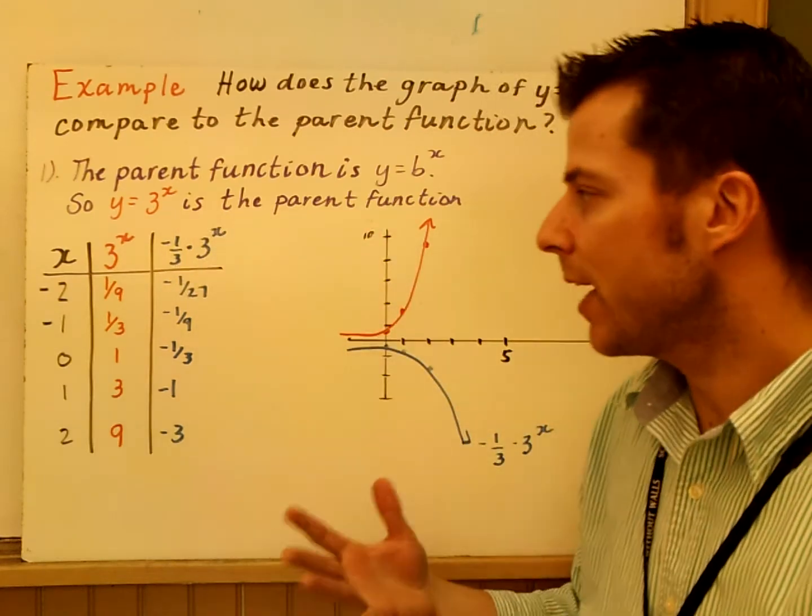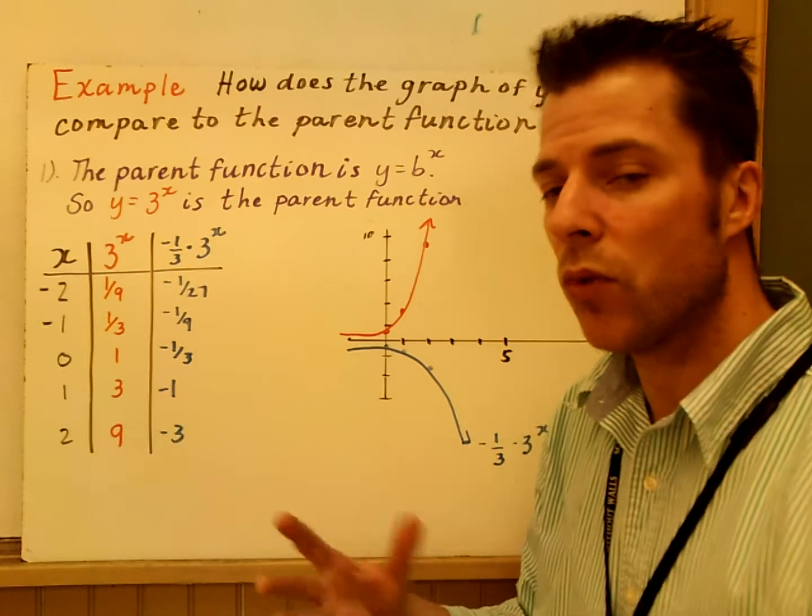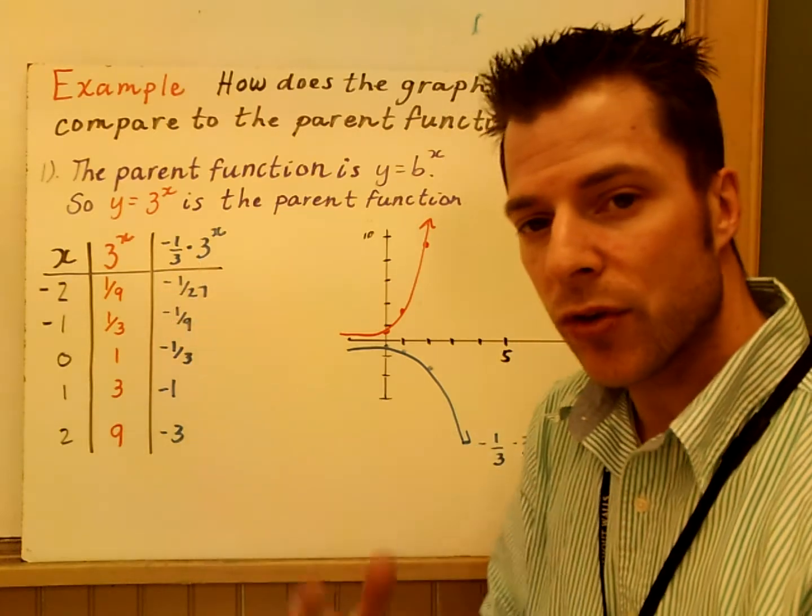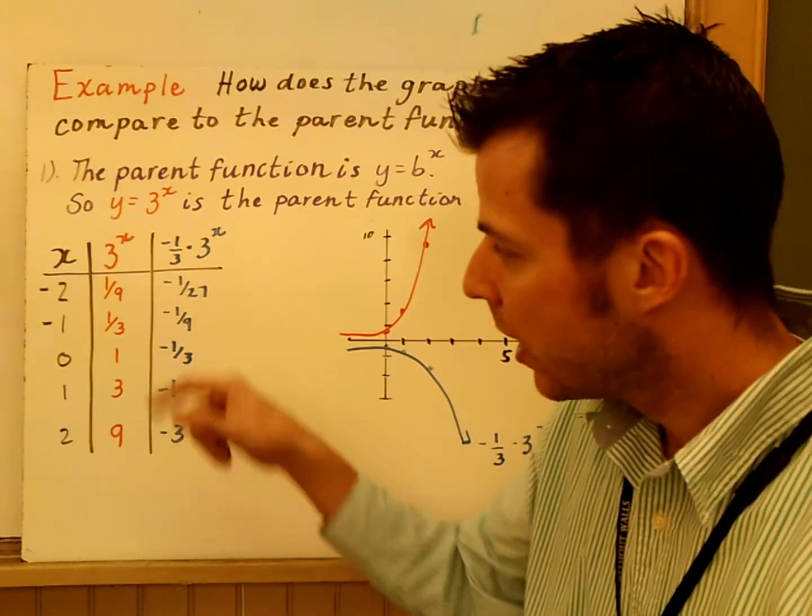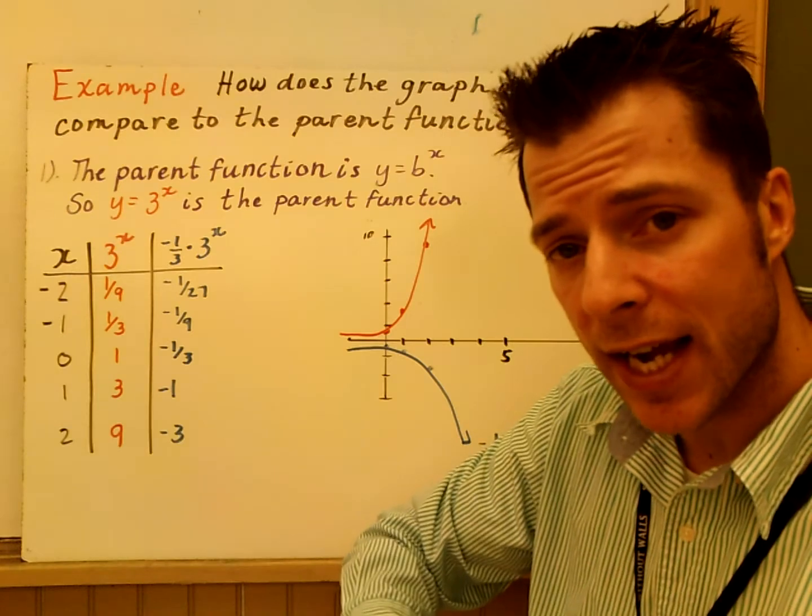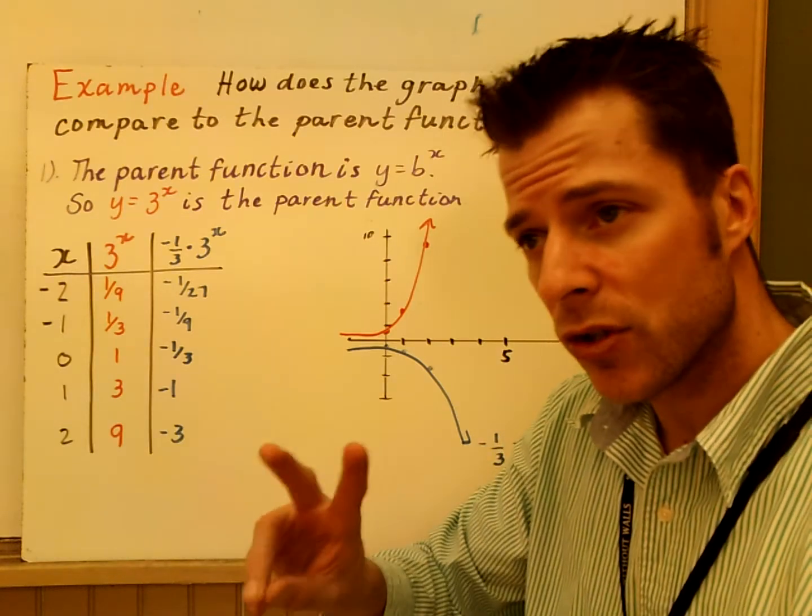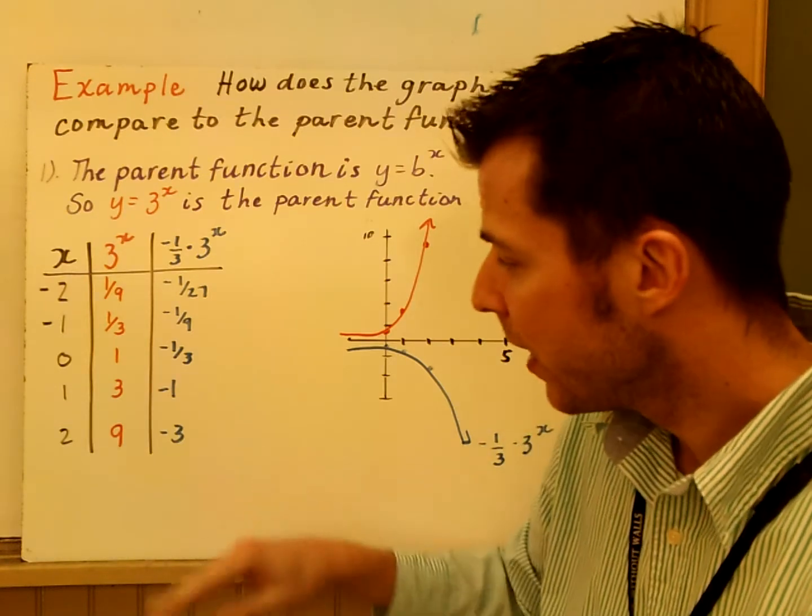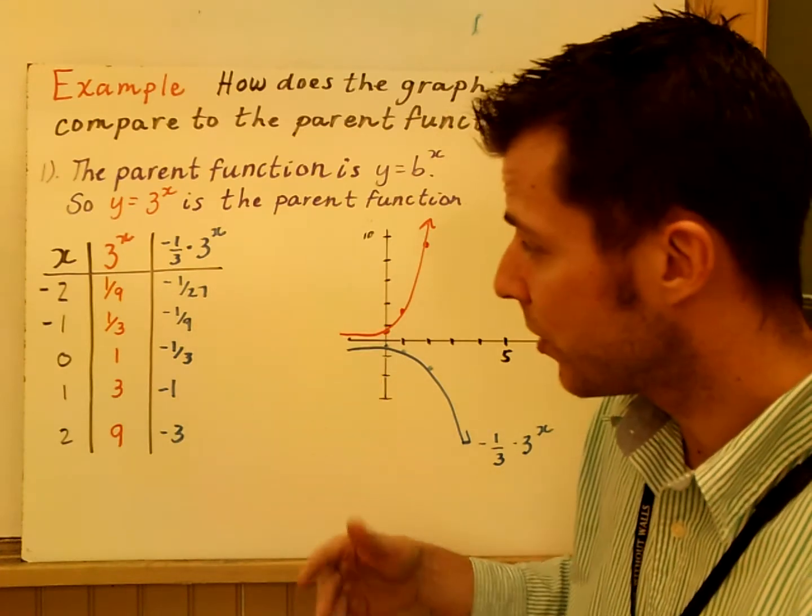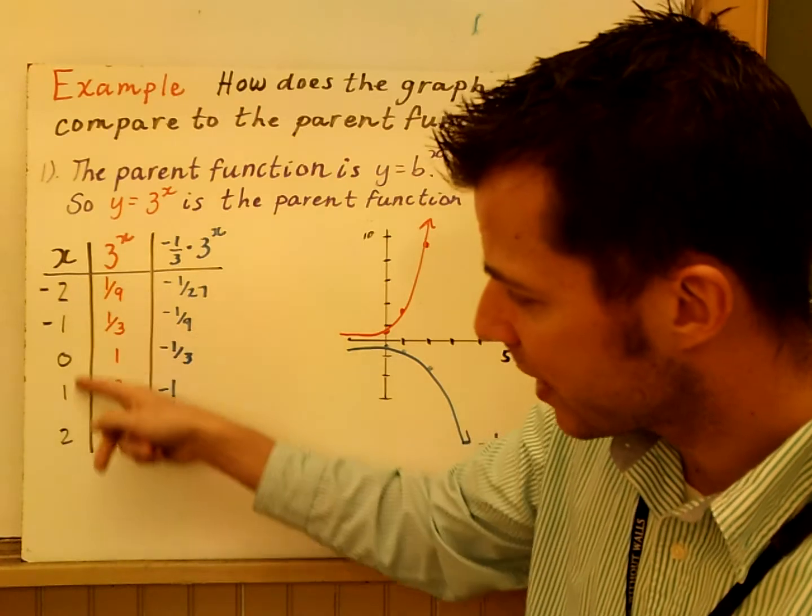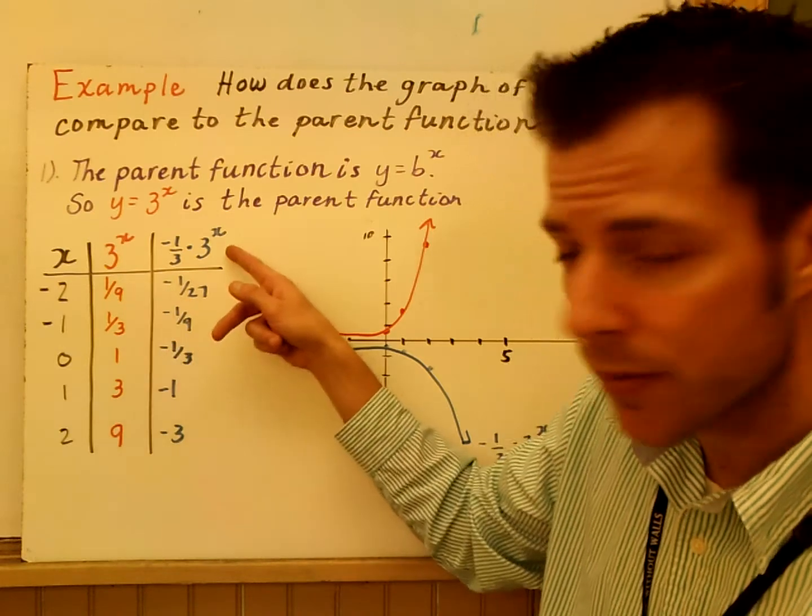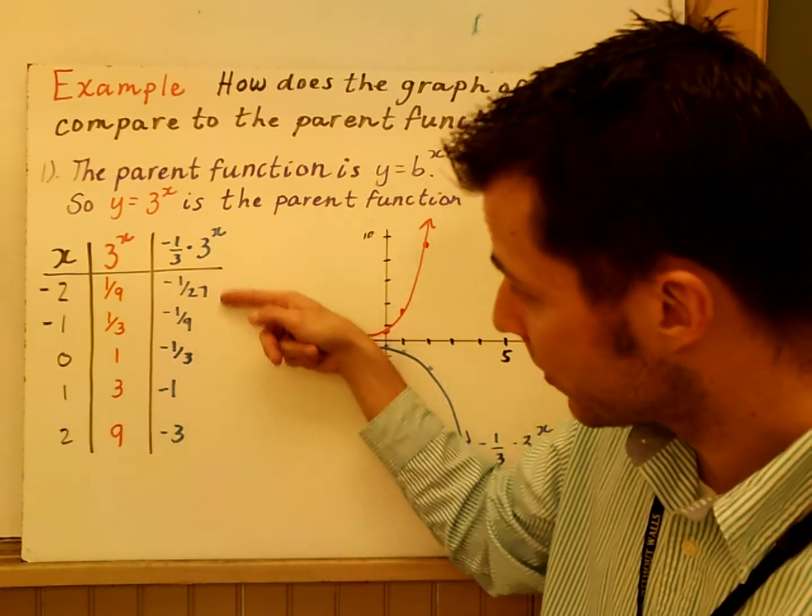I probably have to graph this in order to see what's going on or what would happen. A is 1 third, so the graph is going to shrink compared to the parent function. A is negative, so the graph is going to be reflected over the X axis. Those are the two main points. And it's also shrinking all these values by negative 1 third. So what I did here is I just made a table of values from negative 2 to 2. Here's the parent function values, and here is my equation values that I was given.